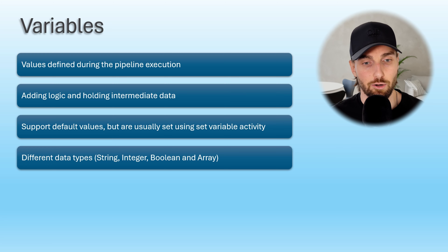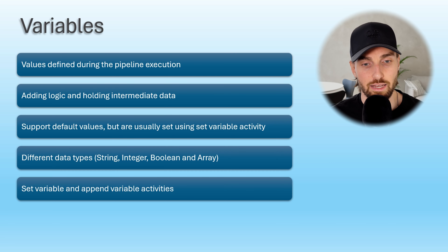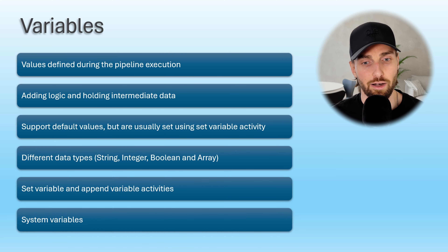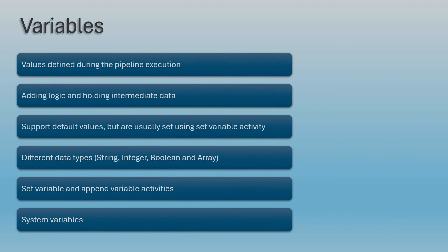The main activities used to interact with variables are the set variable and the append variable activity. With the set variable activity, variables can be assigned hard-coded or dynamic values using expressions. The append variable activity is meant for adding new items to the end of array type variables. There are also many system variables that are already predefined and hold system-related information, like the pipeline name, pipeline trigger time, or workspace ID.